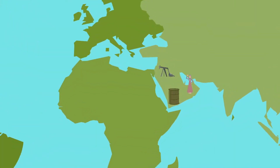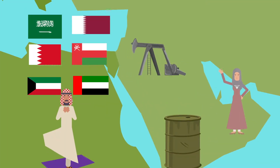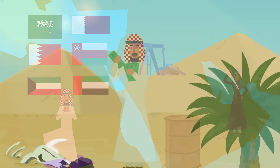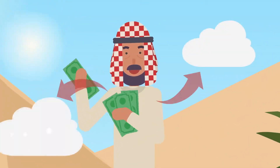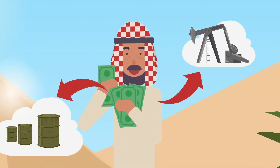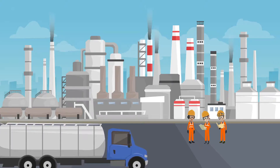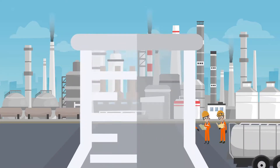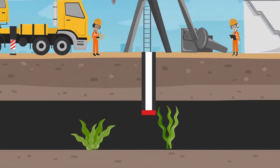Why is it that the Persian Gulf countries in the Middle East have so much oil, and Arabs from that region are considered rich, while their societies lack a lower class? We are not going to talk about oil chemically.